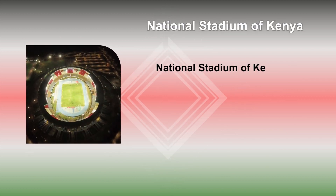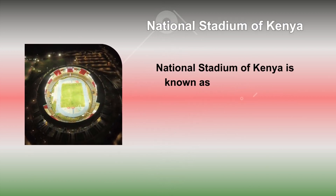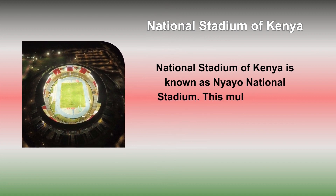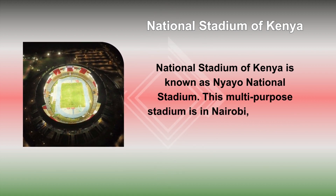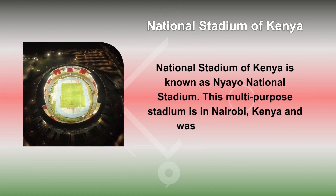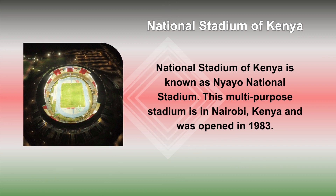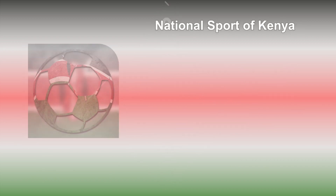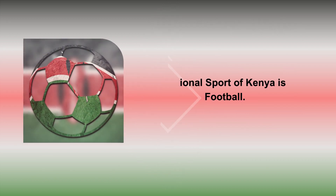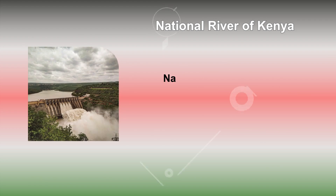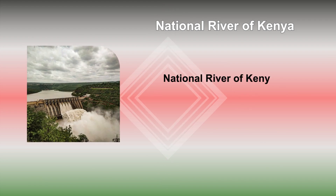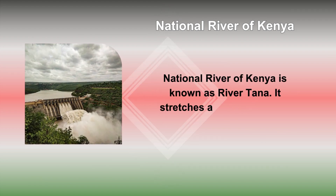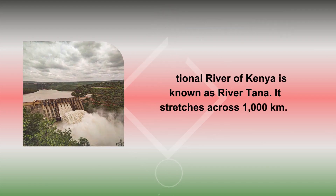The National Stadium of Kenya is known as Nyayo National Stadium. This multi-purpose stadium is in Nairobi, Kenya, and was opened in 1983. The national sport of Kenya is football. The National River of Kenya is known as River Tana, and it stretches across 1,000 kilometers.